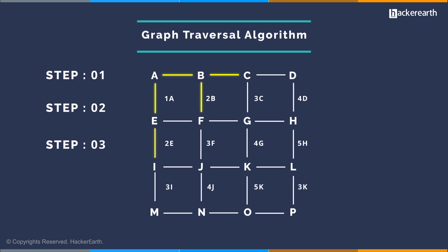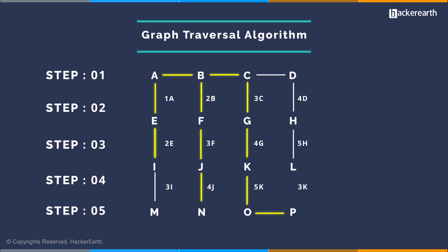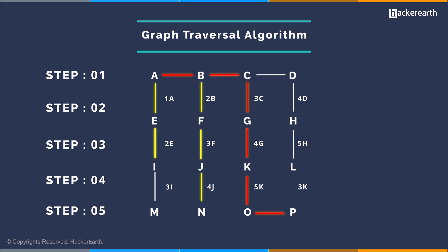Step 3: Visit neighboring nodes of E. Since F is already visited by B, visit node I (2-E) and mark E as visited. Step 4: Repeat the steps for all nodes until each has been visited at least once. Step 5: Remove all unconnected vertices and convert the graph into a minimum spanning tree connecting each node at least once. Highlight the nodes connecting source node A to node P, which has the distance 6 and is the shortest path. You now understand why GPS navigation didn't suggest paths like A-E-I-M-N-O-P or A-B-C-D-H-L-P, though they were equidistant.